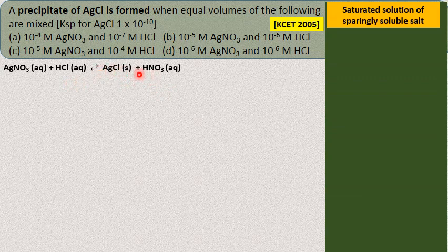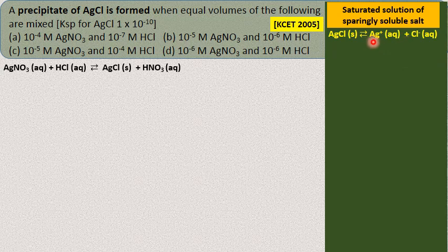Let us take a saturated solution of a sparingly soluble salt like silver chloride. Silver chloride is a sparingly soluble salt, meaning a small amount dissolves in water. When you add silver chloride to water initially, it dissolves and dissociates into silver ions and chloride ions. As you keep adding silver chloride, at one stage the added silver chloride will not dissolve and remains as a solid — that condition is called equilibrium.